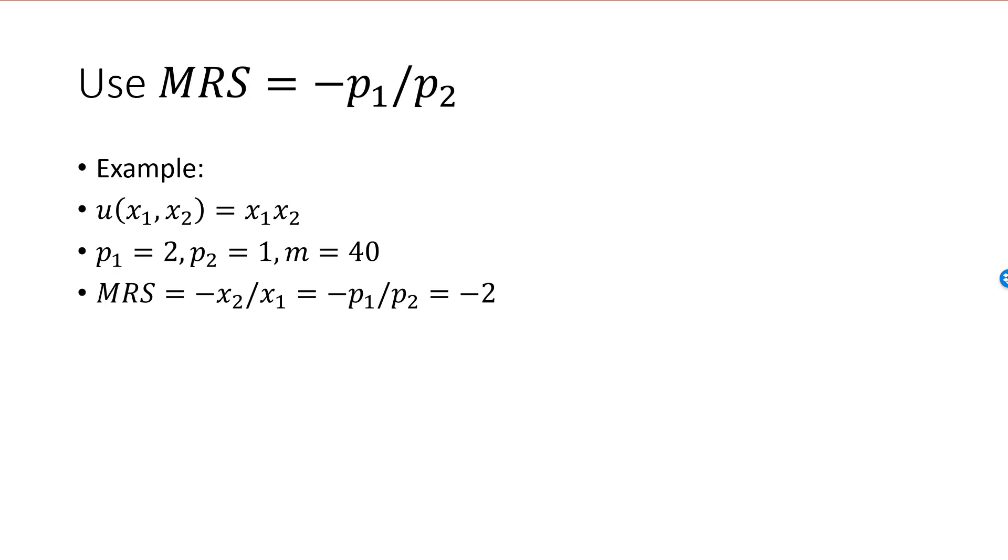Mu1, the marginal utility of good one, the partial derivative of U with respect to x1 is x2. Mu2, the partial derivative of U with respect to x2 is x1. MRS is minus mu1 over mu2, which is minus x2 divided by x1. We set MRS equal to minus P1 over P2, which is minus 2. This is our first equation that our optimal bundle must satisfy.